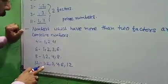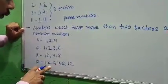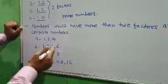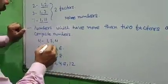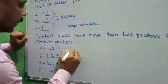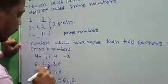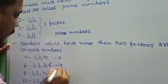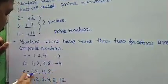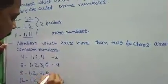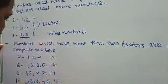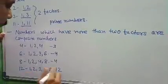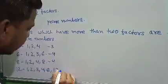Number twelve has factors one, two, three, four, six, and twelve. Look here: the number of factors for four is three, for six is four, for eight is four, and for twelve is six.